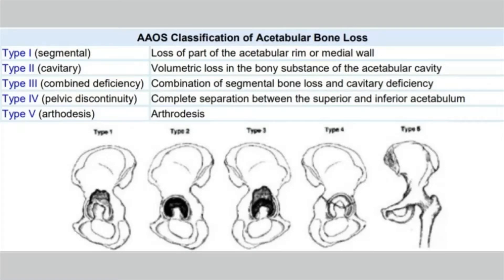In type two, there will be a volumetric loss in the bony substance of the acetabular cavity. Type three is a combined defect — segmental loss as well as cavitary deficiency. Type four is pelvic discontinuity, where there is complete separation between the superior and inferior acetabulum. And then there is type five, which is arthrodesis.